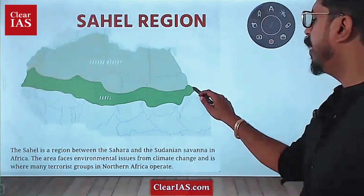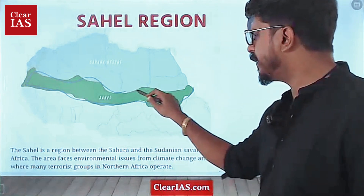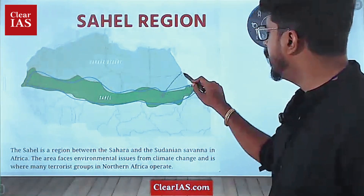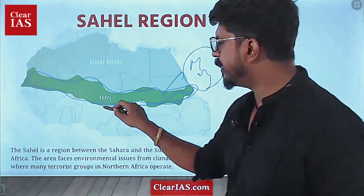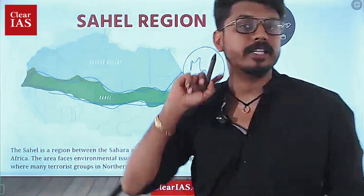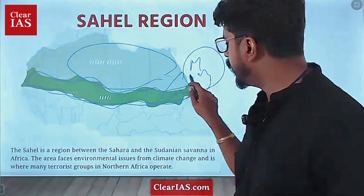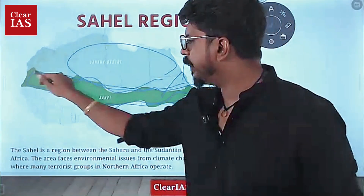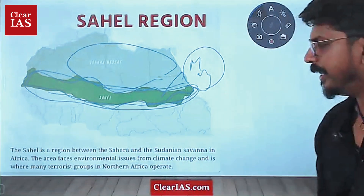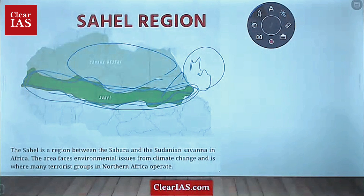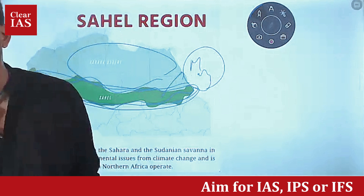One of the world's most underdeveloped and most problematic regions, where there is a lot of terrorism, militancy groups, and armed groups that control this area — this area is called the Sahel region. Below the Sahara Desert, a continuous span of very underdeveloped area is called the Sahel region. Next, we are going to write down the heading 'Sahel region.' You have to take down the map of Africa.